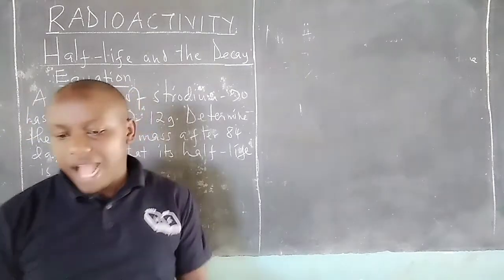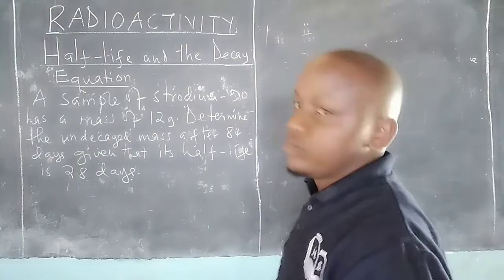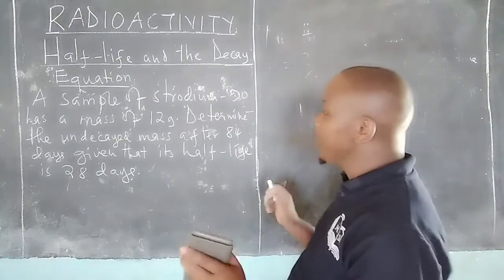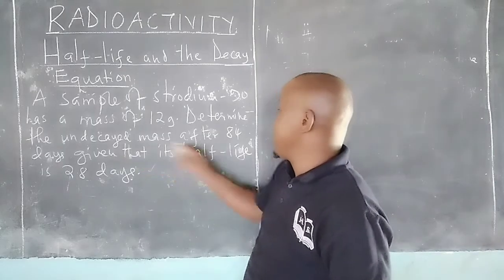So we have a substance here whose half-life is 28 days, and it is going to disintegrate for 84 days. We want to determine the mass remaining if the starting mass was 12 grams.